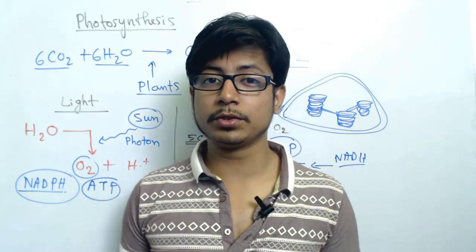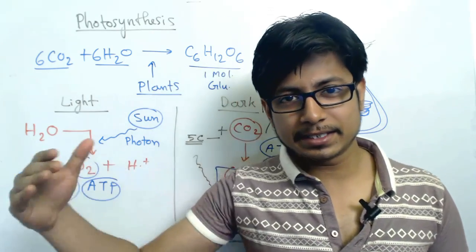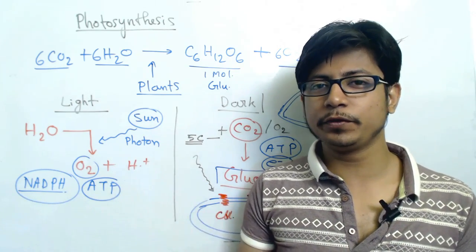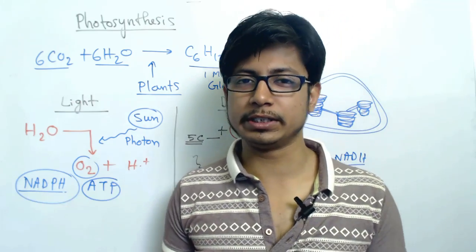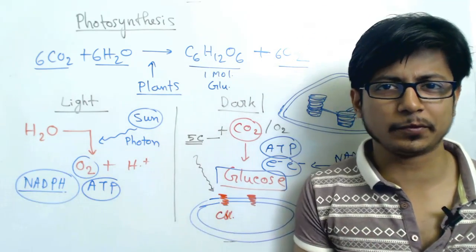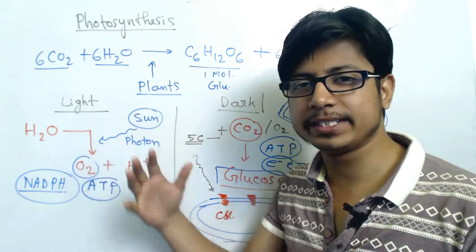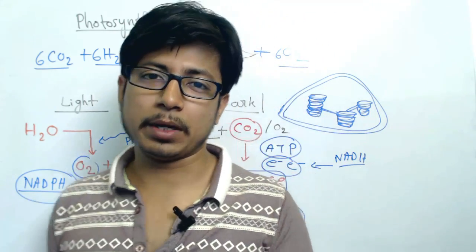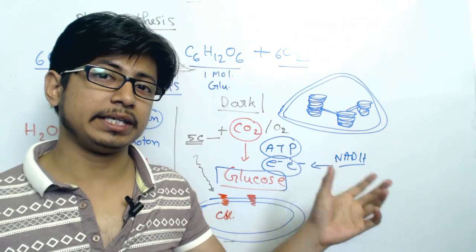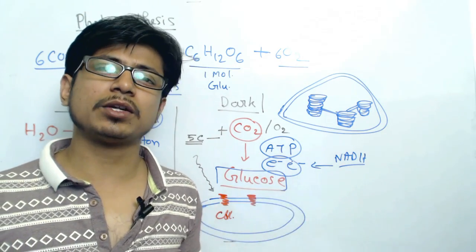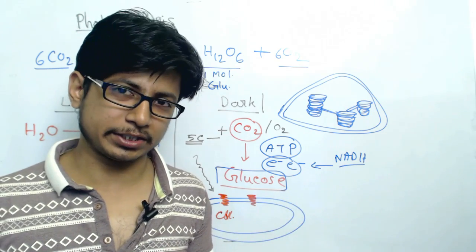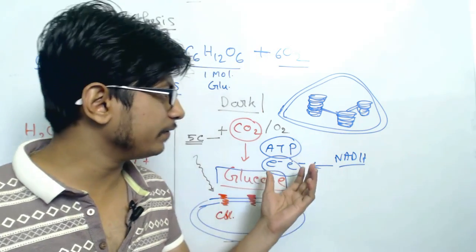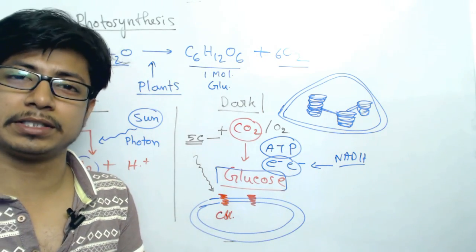Hello friends, welcome to another video tutorial from Shomu's Biology. In this series we are talking about plant photosynthesis. In the last two videos we saw the overview of photosynthesis and the light reactions. Now in this video we want to talk about the Calvin cycle in detail. The Calvin cycle is also known as the dark reactions, but that is not entirely accurate because the Calvin cycle also occurs in the presence of light.